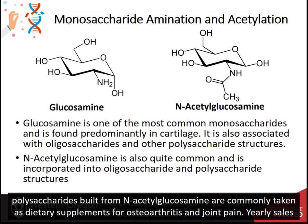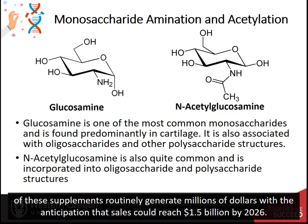Glucosamine and other polysaccharides built from N-acetylglucosamine are commonly taken as dietary supplements for osteoarthritis and joint pain. Yearly sales of these supplements routinely generate millions of dollars, with the anticipation that sales could reach 1.5 billion by 2026.